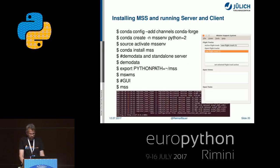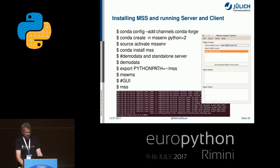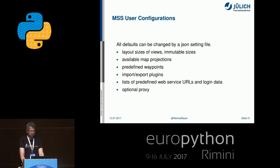Installation is quite easy as it is a conda-forge application: edit the conda-forge channel, create and activate an environment, and install it. We have demo server data implemented so you can set up a localhost demo data server to check how it works. There are many configurations that can be overwritten by a JSON file — for example, different map projections, custom import/export plugins, or a local cache proxy for very slow network connections.